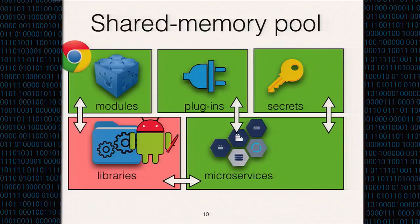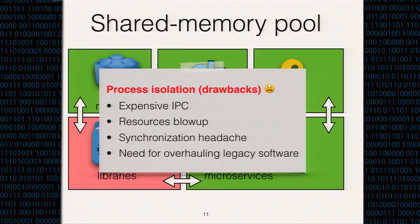One can use processes to isolate software components. Google's Chrome web browser uses a multi-process architecture to isolate browser resources. But in general, process isolation has its own drawbacks. For example, non-trivial IPC increases code complexity and sometimes performance overhead, and there is a lot of resource duplication at the system level. Cross-process synchronization can also be a headache for programmers. And most importantly, it is extremely difficult to overhaul programs with a large code base to use process isolation.